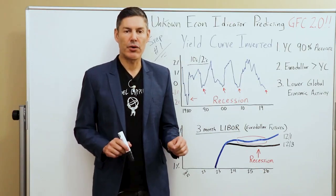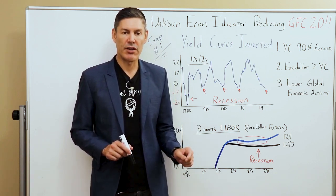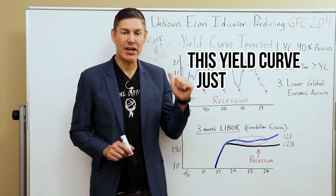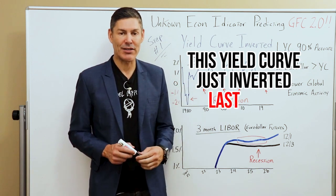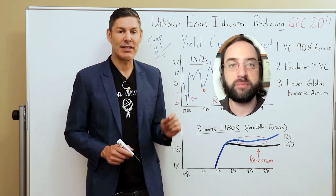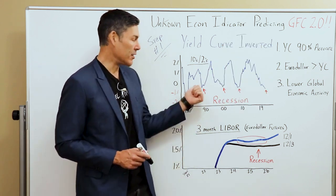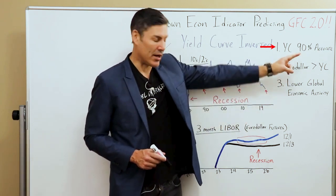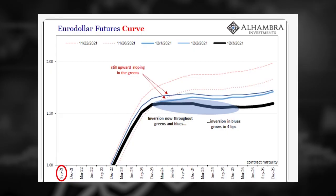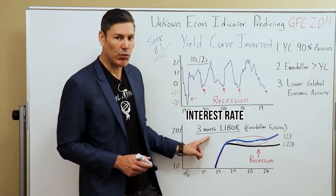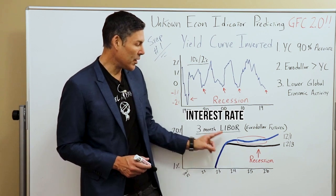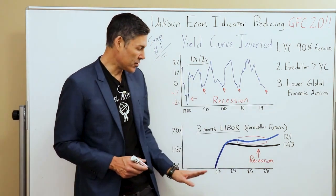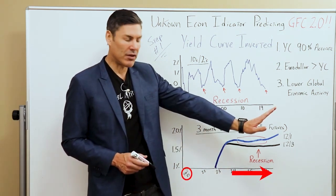Euro-dollar futures are a LIBOR-based derivative reflecting the London Interbank Offered Rate for a three-month $1 million offshore deposit. So euro-dollar futures are basically predicting what the interest rate on LIBOR will be into the future. Now that we understand what euro-dollar futures are, let's check out a chart that shows this yield curve just inverted last week. According to Jeff Snyder, it has even more predictive ability than the Treasury market yield curve — which is 90% plus accurate. This chart starts in September 2021 and goes all the way to 2026, predicting what the interest rate will be on three-month LIBOR going into the future — five years out.